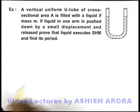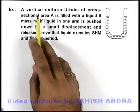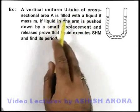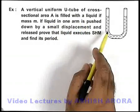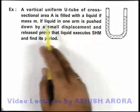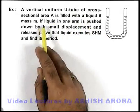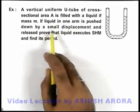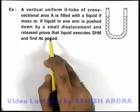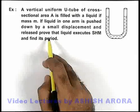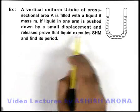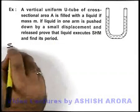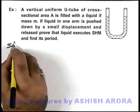In this example, we are given that a vertical uniform U-tube of cross-sectional area A is filled with a liquid of mass m. It is saying if liquid in one arm is pushed down by a small displacement and released, we are required to prove that the liquid executes simple harmonic motion, and we are also required to find its time period.